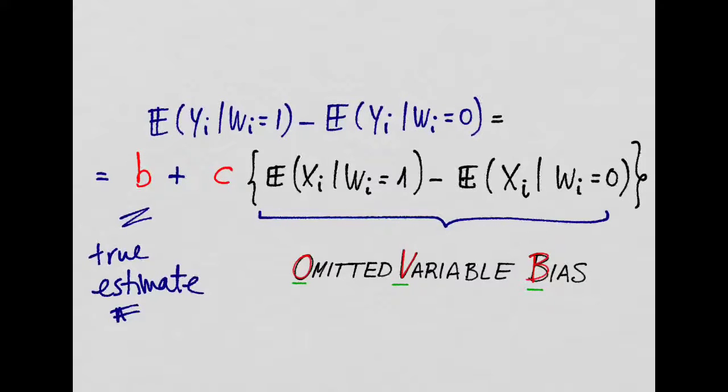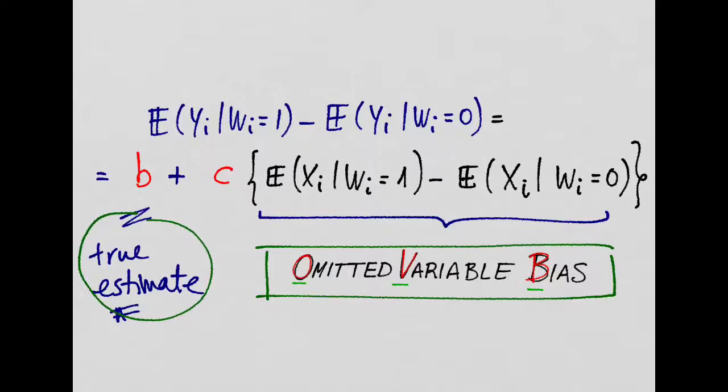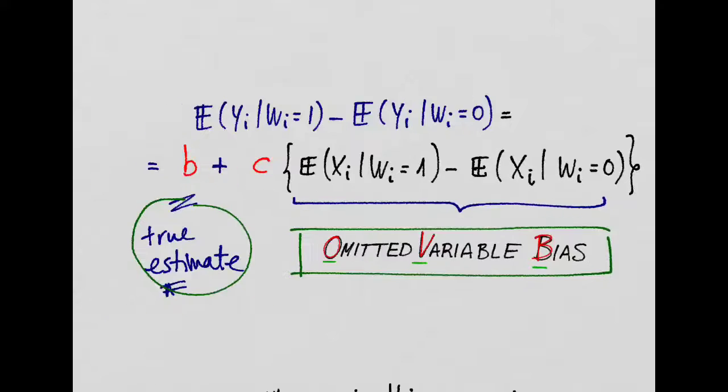Now, this thing that is messing up with our true estimate has the name of omitted variable bias. And ideally, we would want to get rid of it.